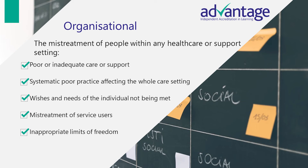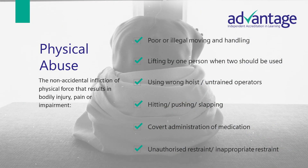The distinction between abuse in organisations and poor care standards is not easily made, and judgements should be made with advice from appropriate professionals and regulatory bodies. Physical abuse can be defined as the non-accidental infliction of physical force that results in bodily injury, pain or impairment. This could include poor or illegal moving and handling, lifting by one person when two should be used, using the wrong hoist or untrained operators, hitting, pushing, slapping, covert administration of medication, or unauthorised and inappropriate restraint.